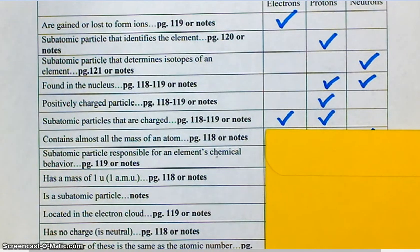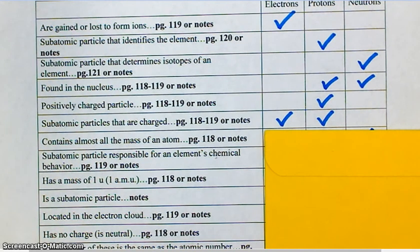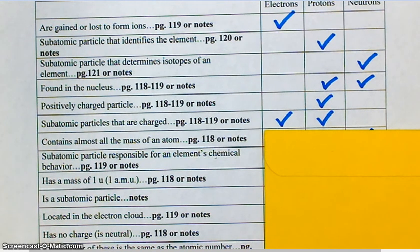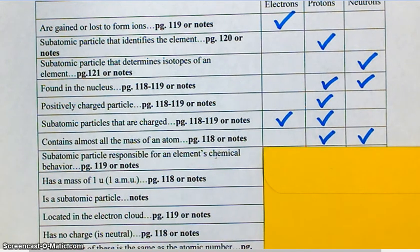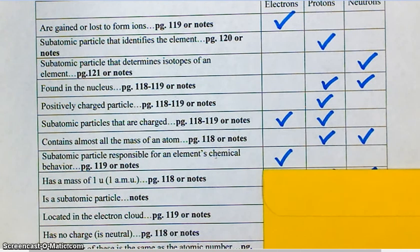All right. Contains almost all the mass of an atom. Protons and neutrons. Basically, the mass of the atom is contained in the nucleus, and the nucleus has protons and neutrons in it. Subatomic particle responsible for an element's chemical behavior. The electrons. Only electrons determine chemical behavior. What do you mean, Ms. Goff, by chemical behavior? Meaning, like, is that atom going to undergo chemical reactions? Is it going to form bonds with things? So it's going to be electrons that determine that.